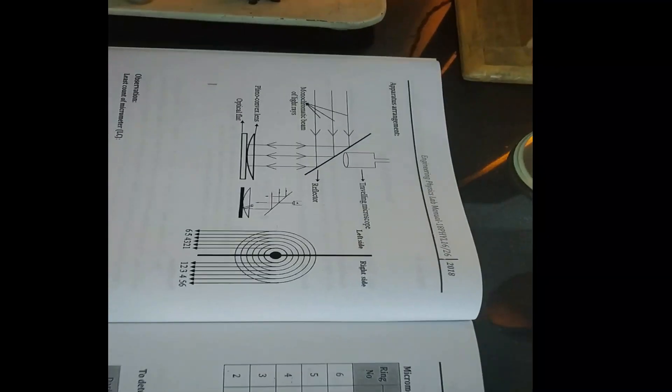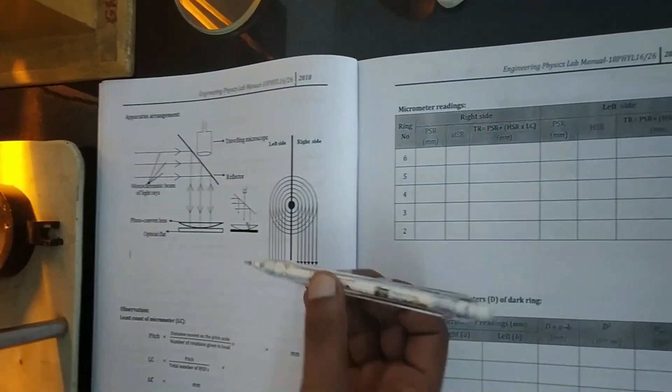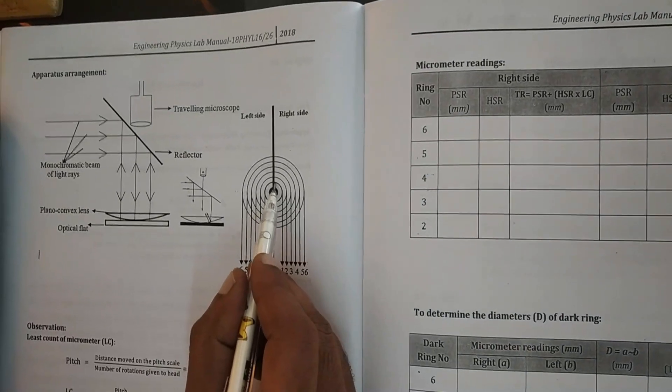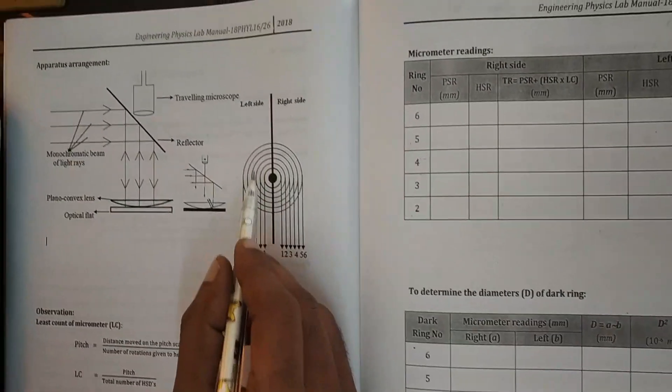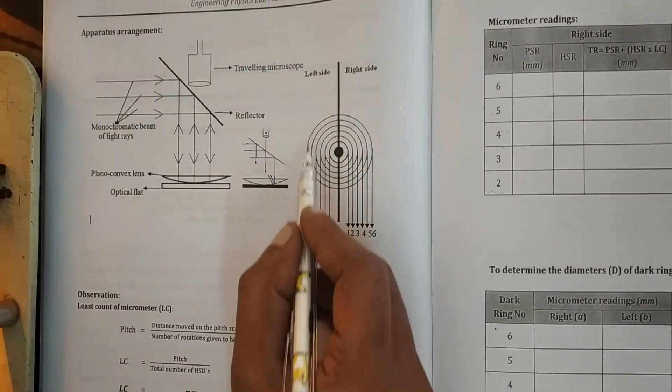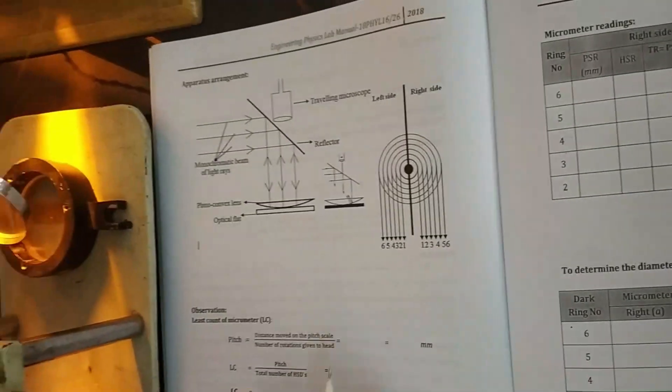Once the setup is complete, Newton's rings can be observed. These are the Newton's rings — here the central dark fringe is visible with alternating bright and dark rings formed on the surface of the planoconvex lens.